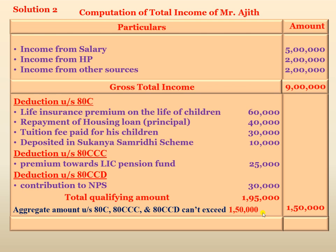The maximum deduction claimable covering these three sections — 80C, 80CCC, and 80CCD — is Rs. 1,50,000. Therefore, total income is Rs. 9,00,000 minus Rs. 1,50,000, which equals Rs. 7,50,000.